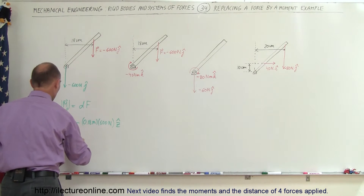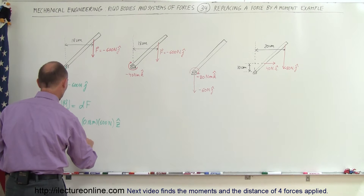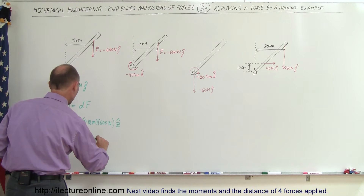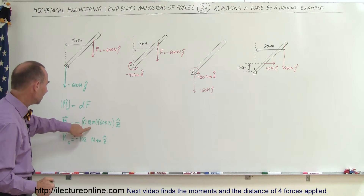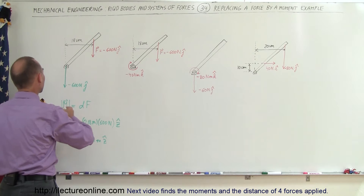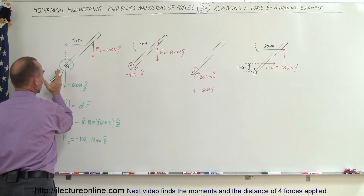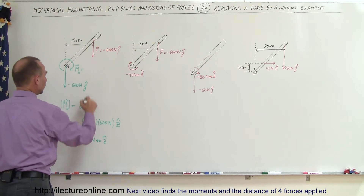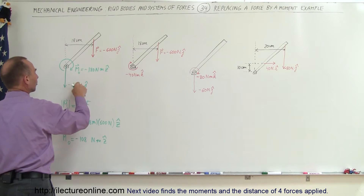Completing this calculation, the moment about the origin equals 0.18 meters times 600 newtons, which gives minus 108 newton meters in the negative z direction. That's a clockwise direction, which we can indicate on the diagram. This means the original force can be replaced by a force drawn at the origin plus a moment about the origin equal to minus 108 newton meters in the z direction.